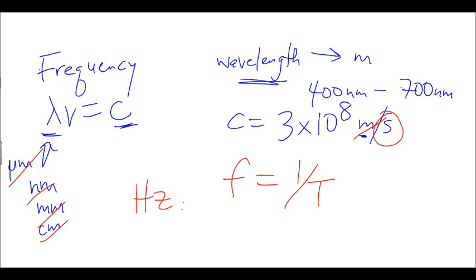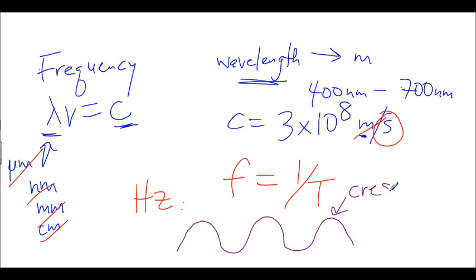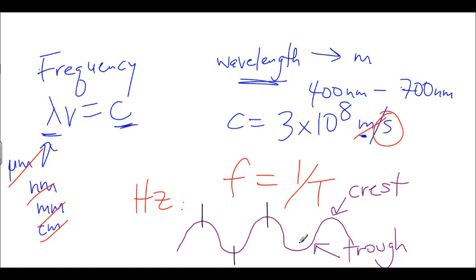So now let's look at really what a wave is. I'm going to draw a wave. The top part of the wave is referred to as the crest, and the bottom part is referred to as the trough. From one crest to another, or from one trough to another, the distance here is our lambda — our wavelength.